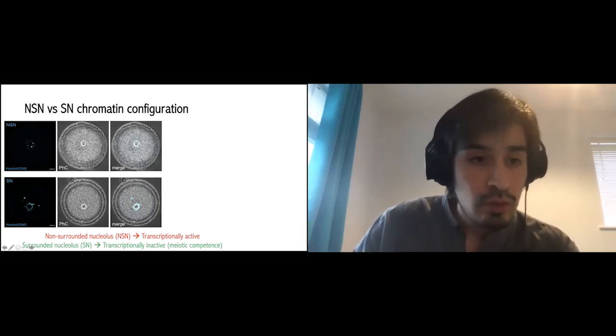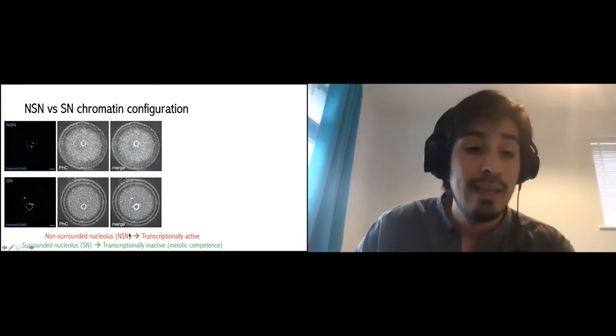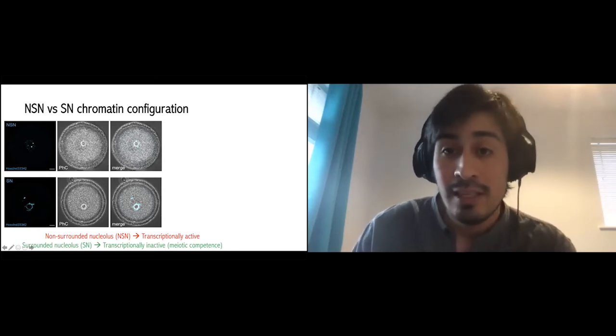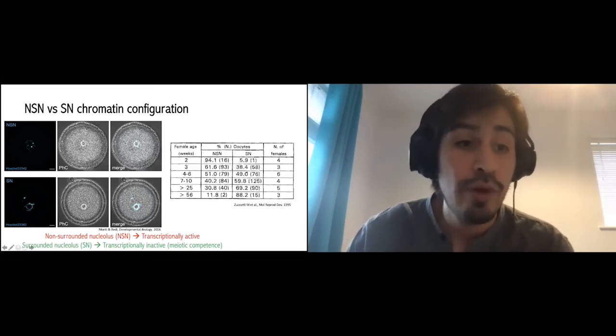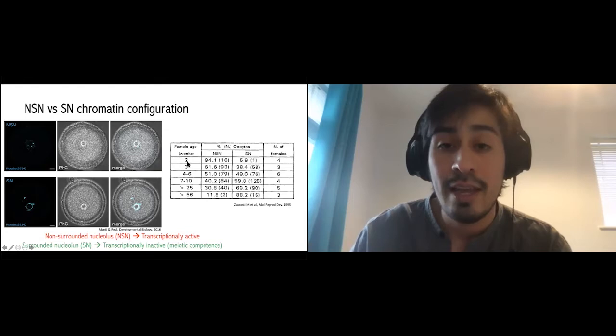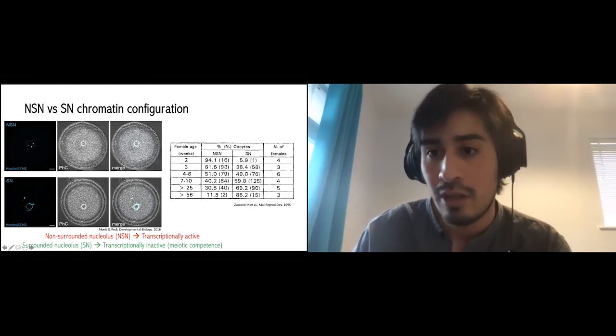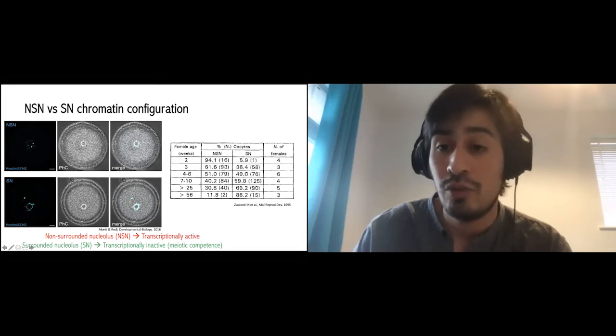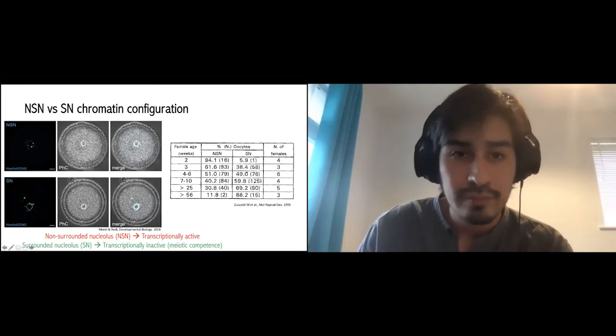Just to put this in terms of competence, the non-surrounded nucleolus state would be transcriptionally active, and the surrounded nucleolus would be transcriptionally inactive, but this is considered mature and will allow for meiotic competence. Also relevant for this study is that the configuration of the chromatin changes with age. In this column, we have increased ages of mice, and here we can see in the third column that the proportion of surrounded nucleolus oocytes also increases. This is something that we have to take into consideration for our study.